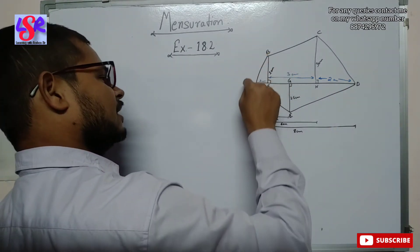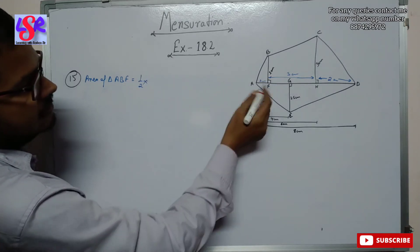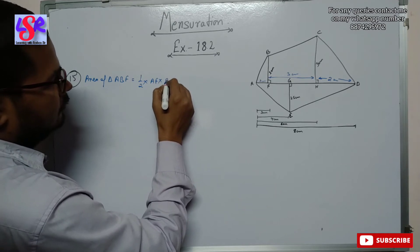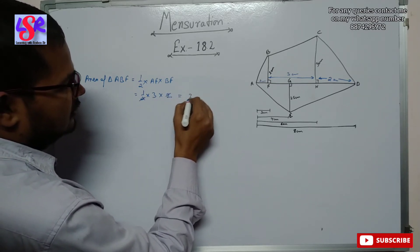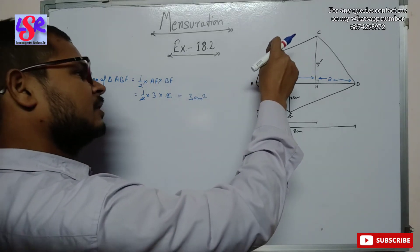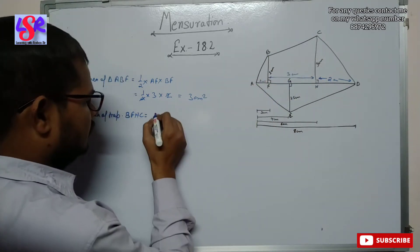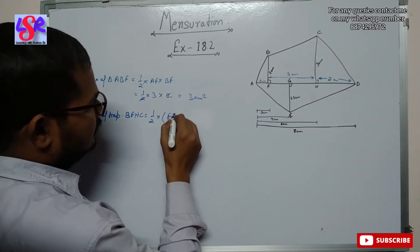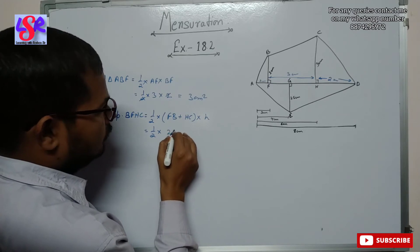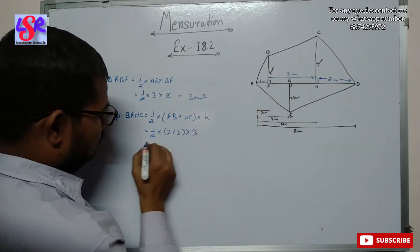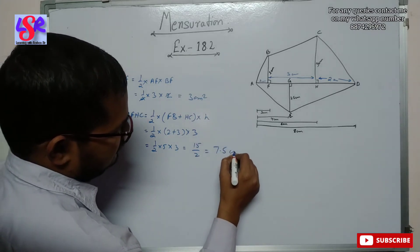We calculate the area of triangle ABF as 1/2 into base AF into height BF, which is 1/2 into 3 into 2. This cancels out to give 3 square centimeters. The area of trapezium BFHC is 1/2 into sum of parallel sides (FB plus HC) into height, which is 1/2 into (2 plus 3) into 3 equals 1/2 into 5 into 3 equals 15/2 equals 7.5 square centimeters.